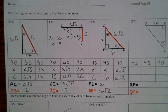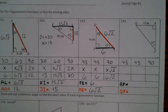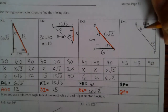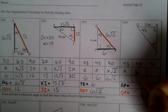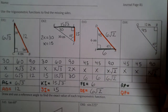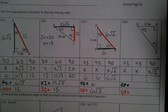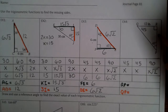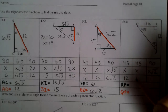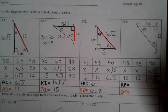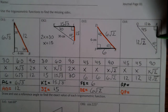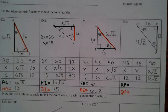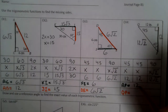Let's take a look at example 4. If this is 45 degrees and this is 45 degrees, we know this is x, x, x square root of 2. It looks like 12 is across from 45, so x is 12. This is 12, this is 12, and this is 12 square root of 2. So RP is 12 and QP is 12 square root of 2.